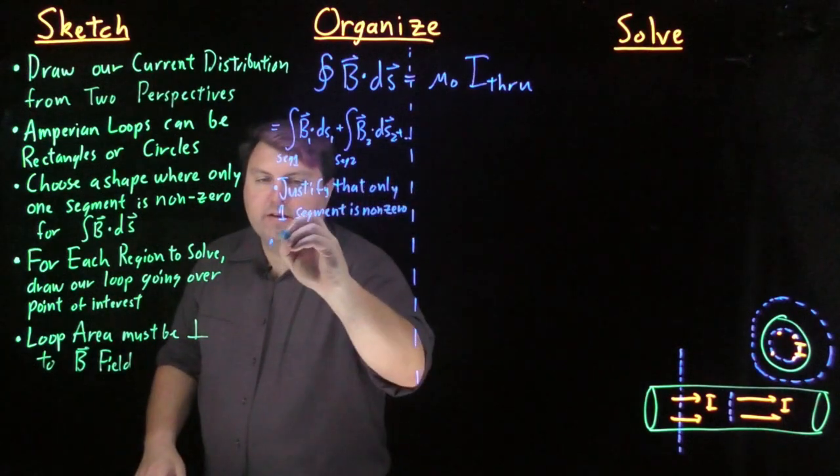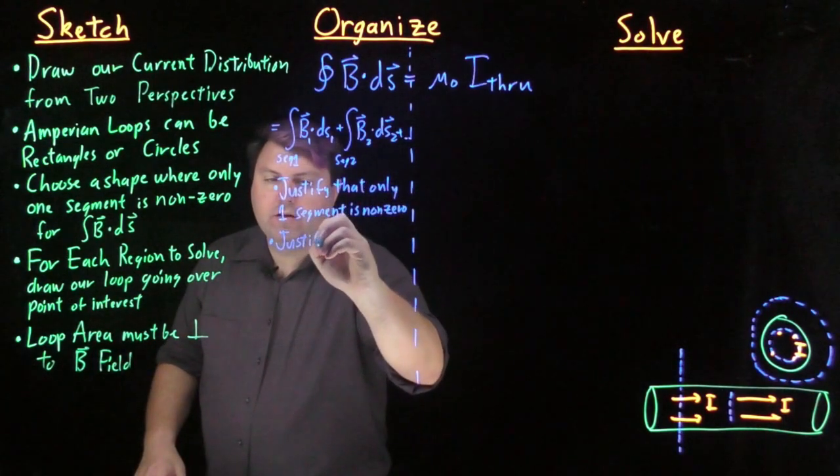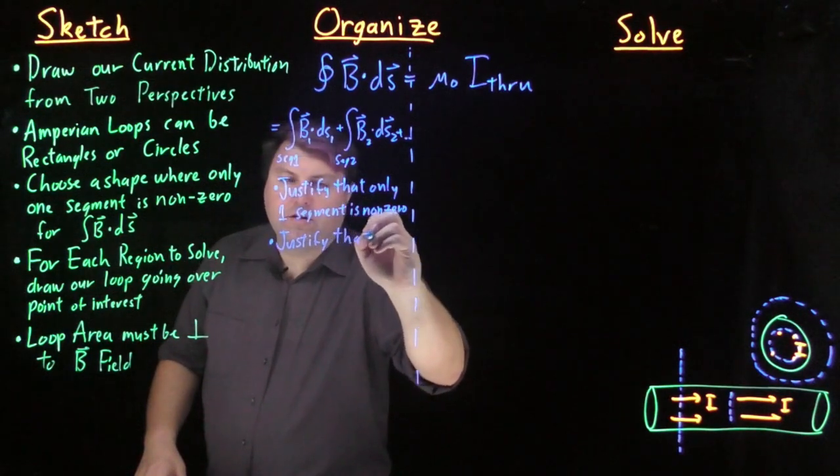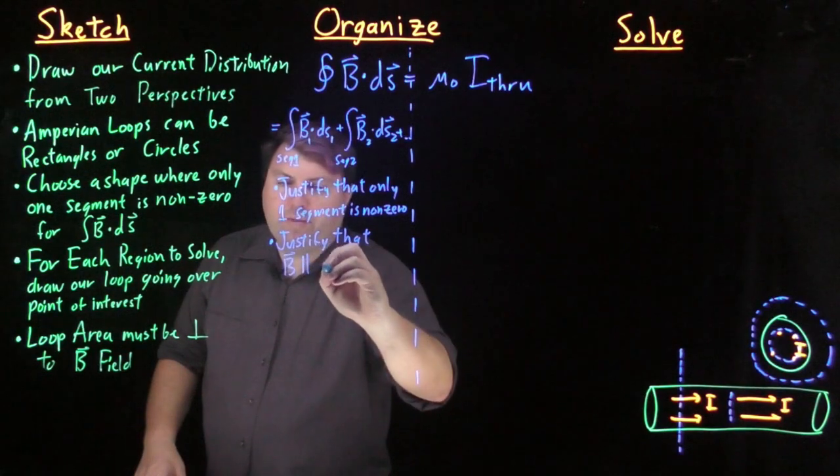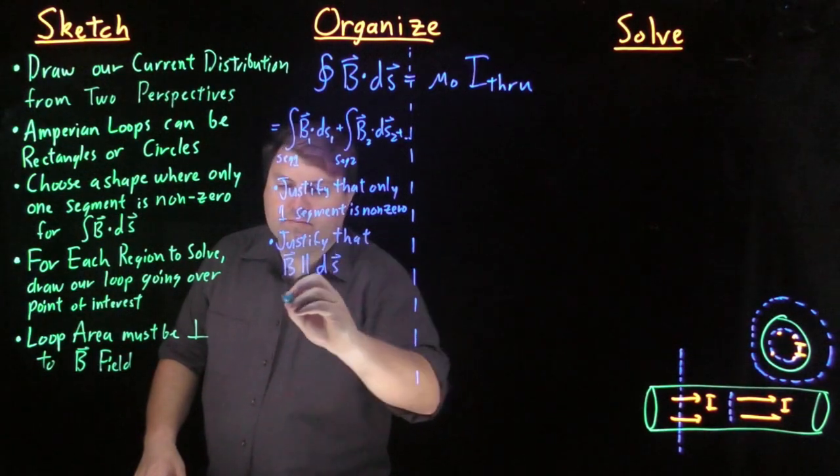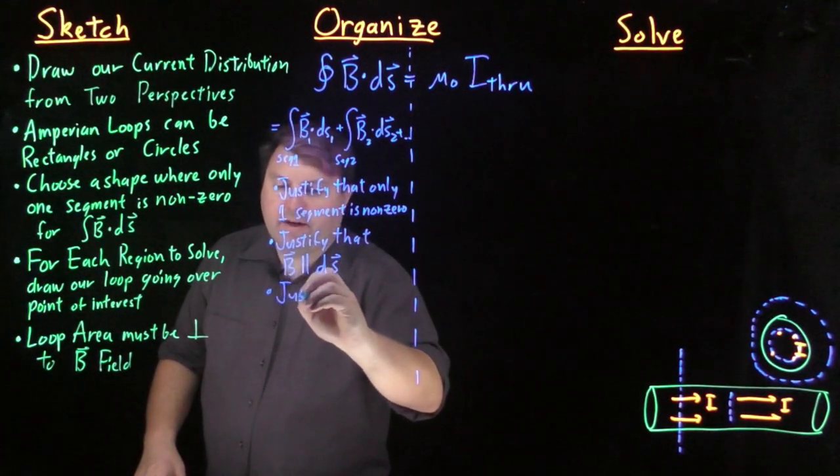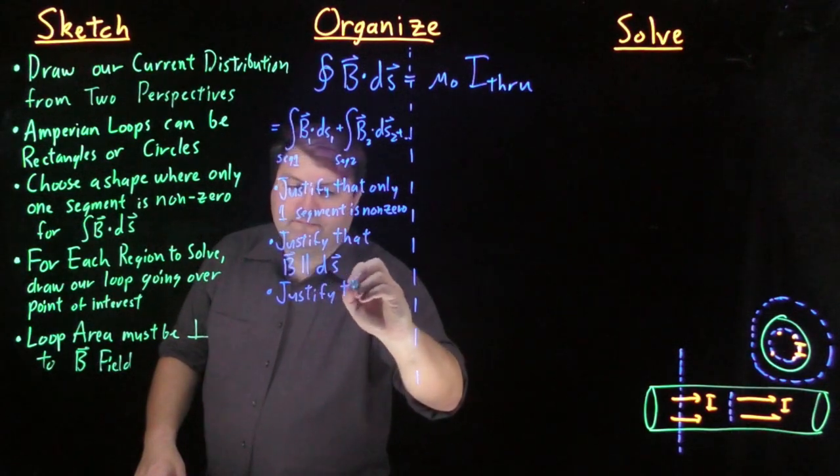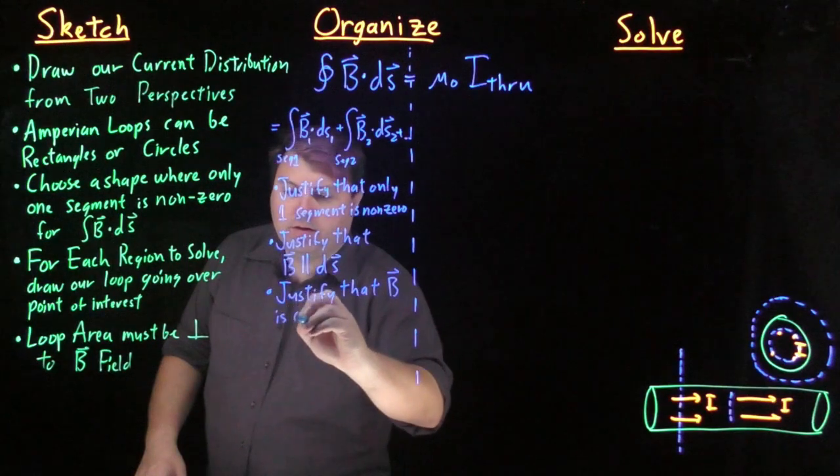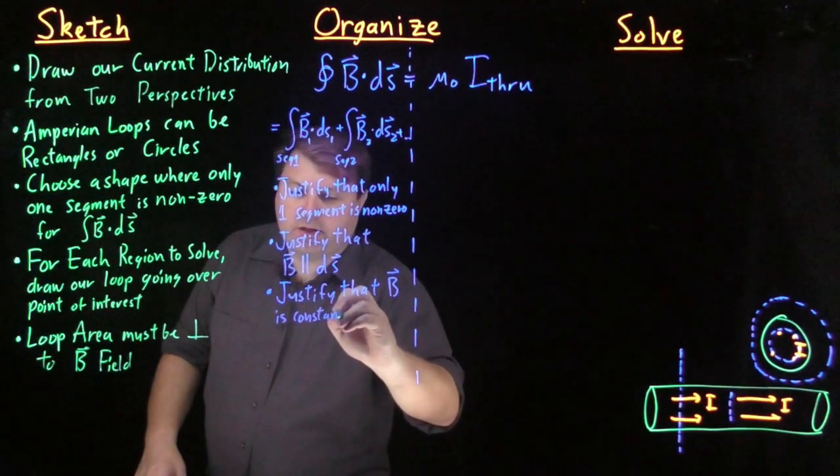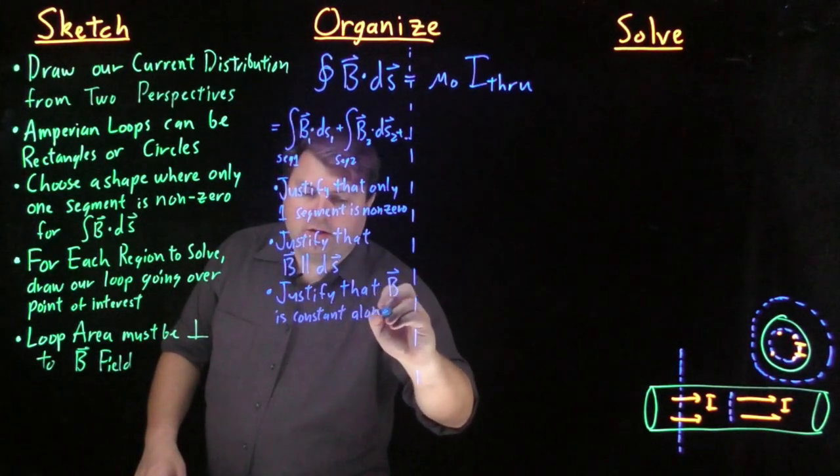And then we have to justify that our magnetic field B is parallel to ds, and justify that our magnetic field B is constant along the segment.